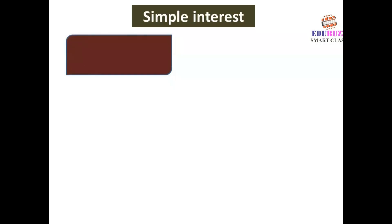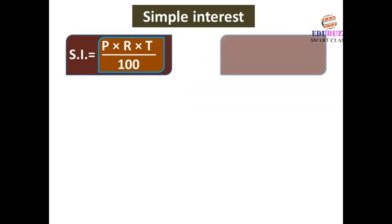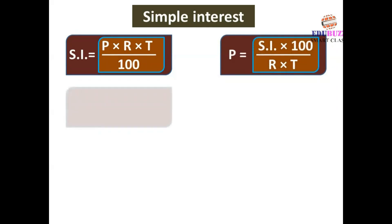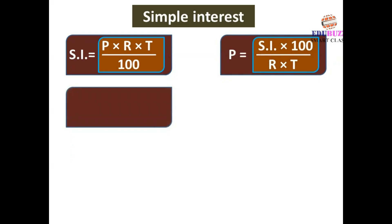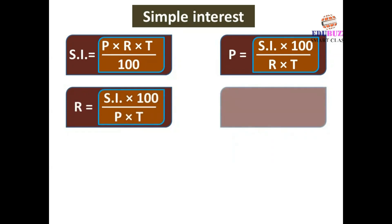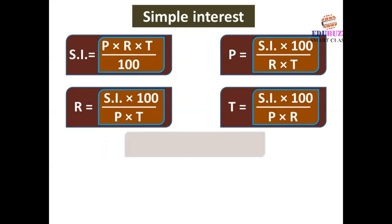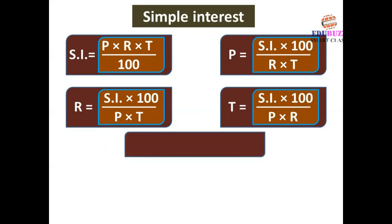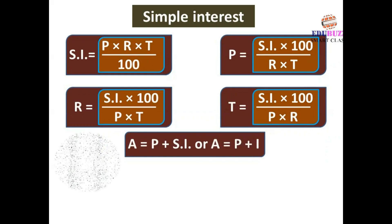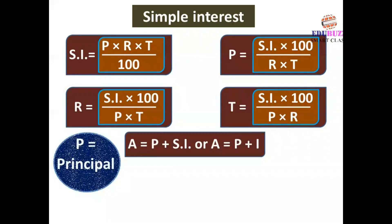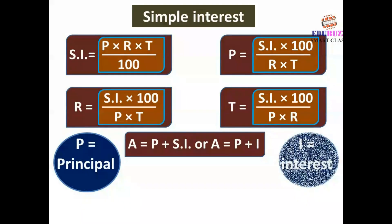Simple Interest (S.I.) = (Principal × Rate × Time) ÷ 100. Principal = (S.I. × 100) ÷ (Rate × Time). Rate = (S.I. × 100) ÷ (Principal × Time). Time = (S.I. × 100) ÷ (Principal × Rate). Amount = Principal + Simple Interest.